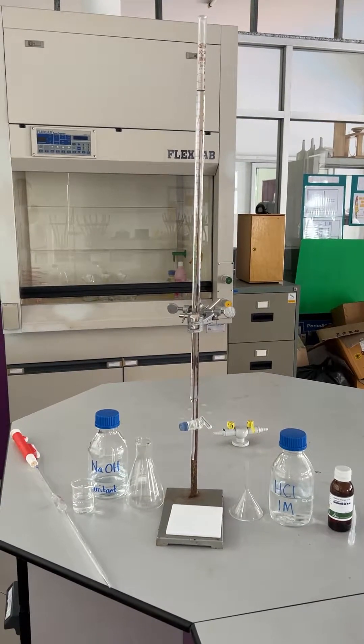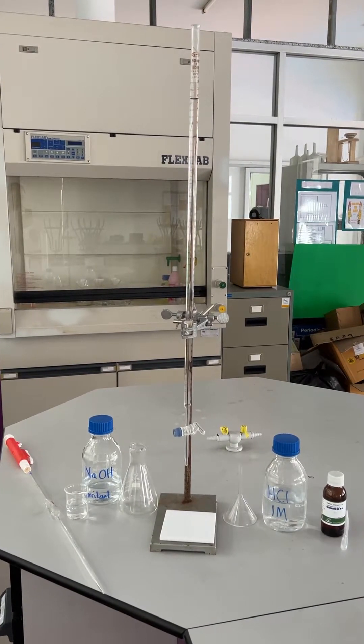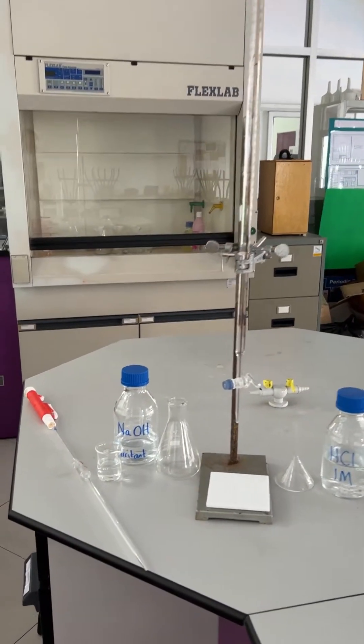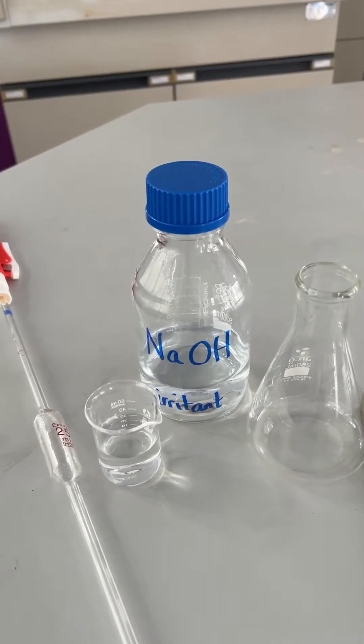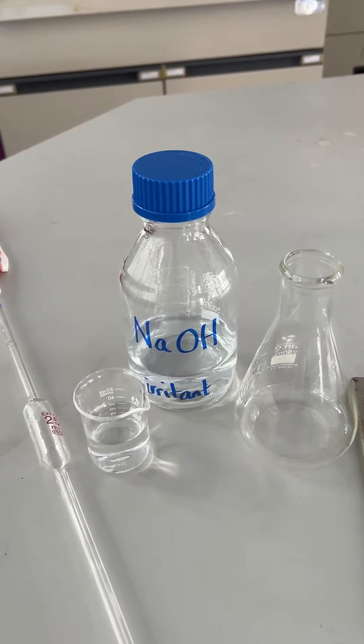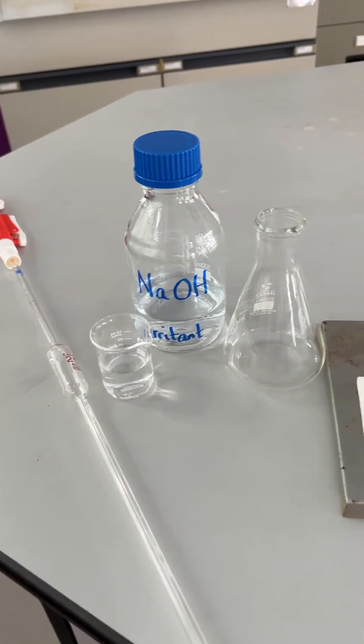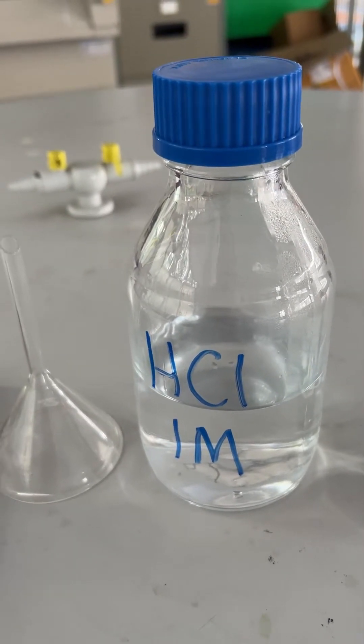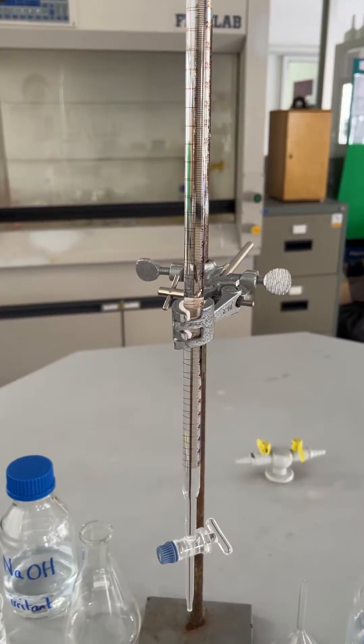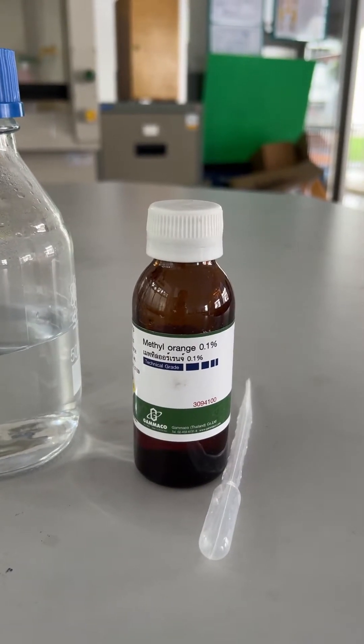In this experiment we will be titrating hydrochloric acid against sodium hydroxide. The sodium hydroxide, 25 cubic centimeters, will be measured using the volumetric pipette. The hydrochloric acid is one molar and will be placed in the burette. We'll be using a methyl orange indicator.